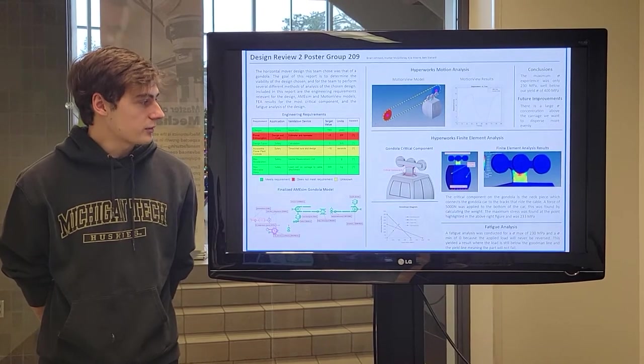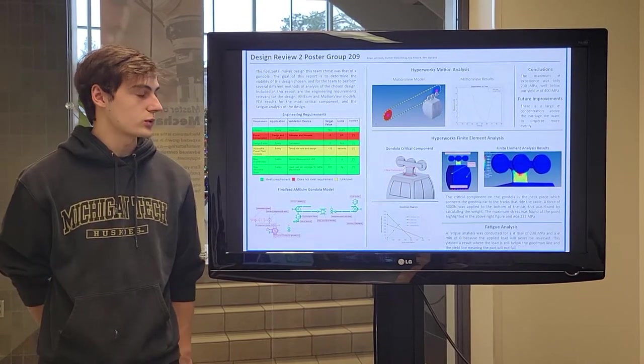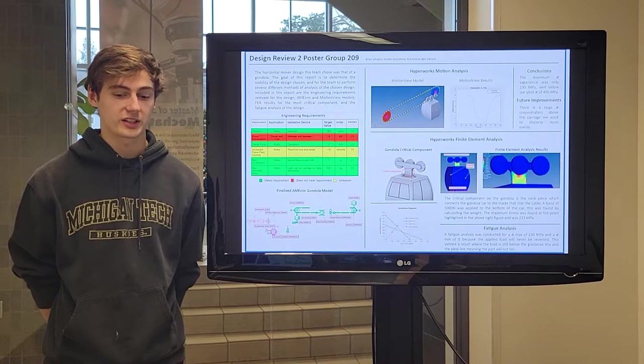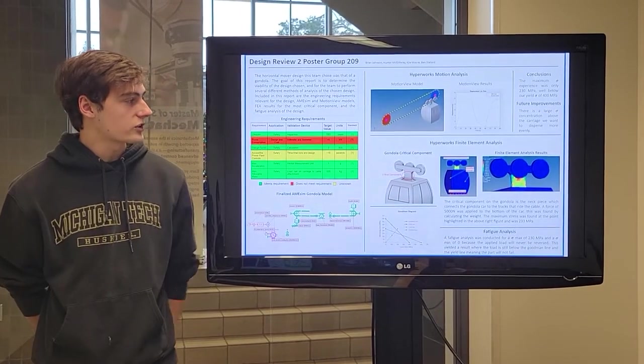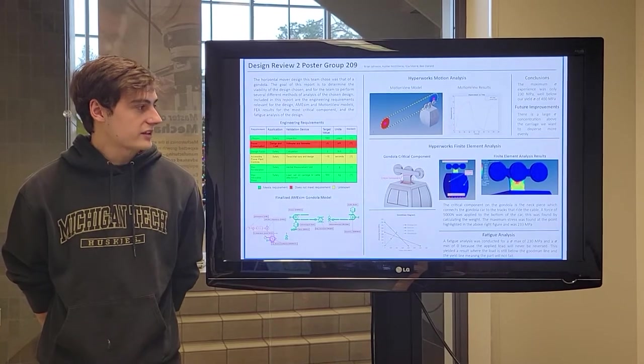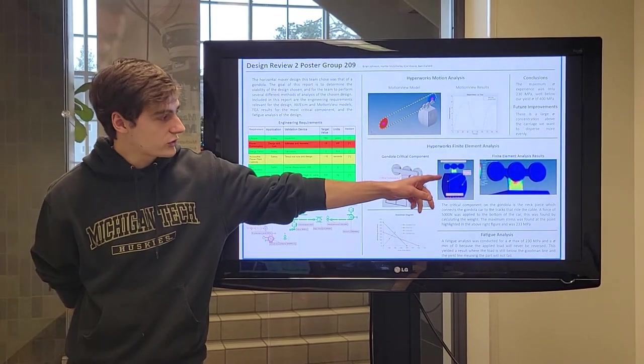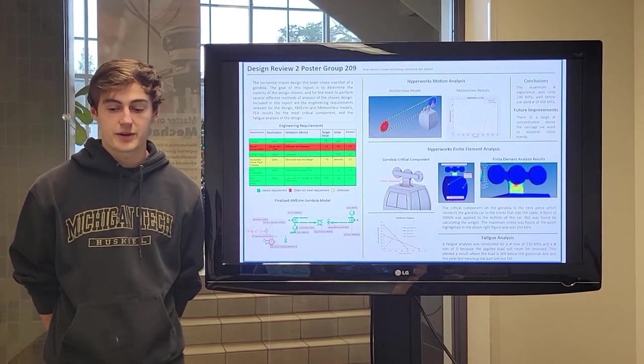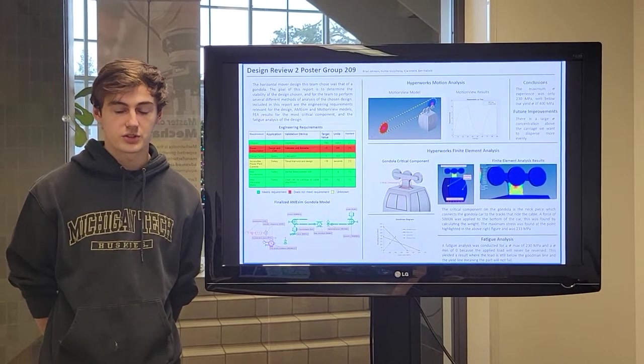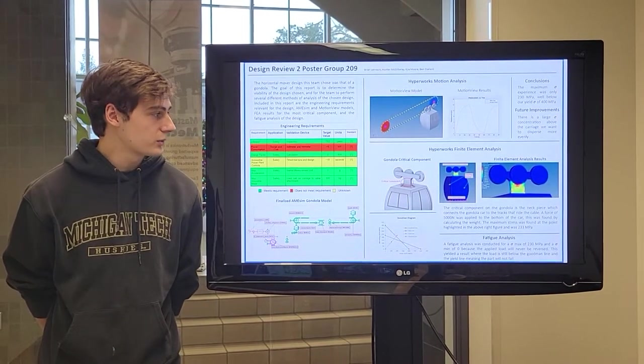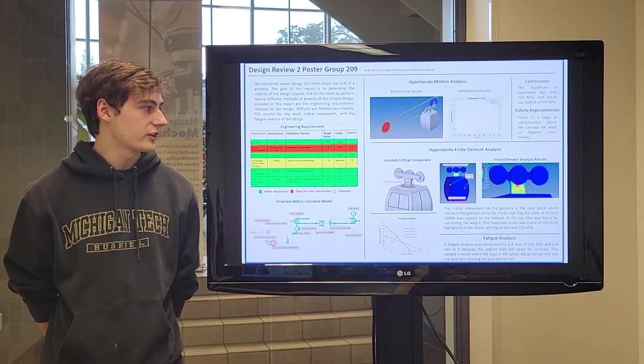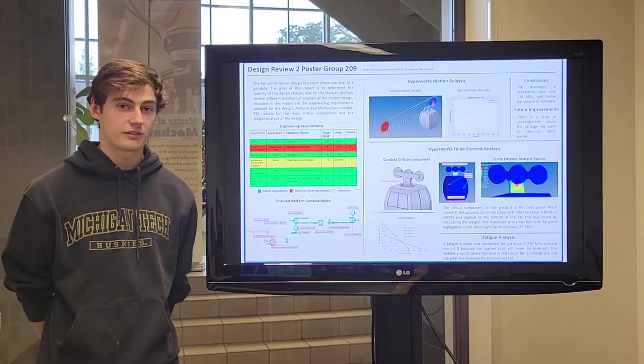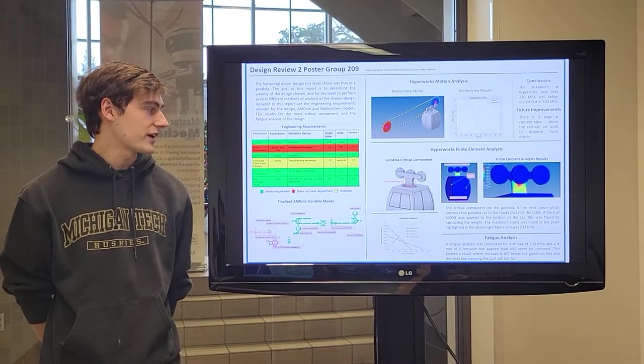We then in the model applied a five kilonewton force downward on the bottom of the gondola car. This was the maximum weight of the gondola. And then we fixed the rollers on top in place. When we ran the simulation, we got the results of the stress concentration shown in those two images there. This gave us the result that the highest maximum stress that would be experienced in the gondola was 233 megapascals. This was a little ways under the maximum stress allowable of 400 megapascals, so thus this verified the design requirement for the factor of safety.